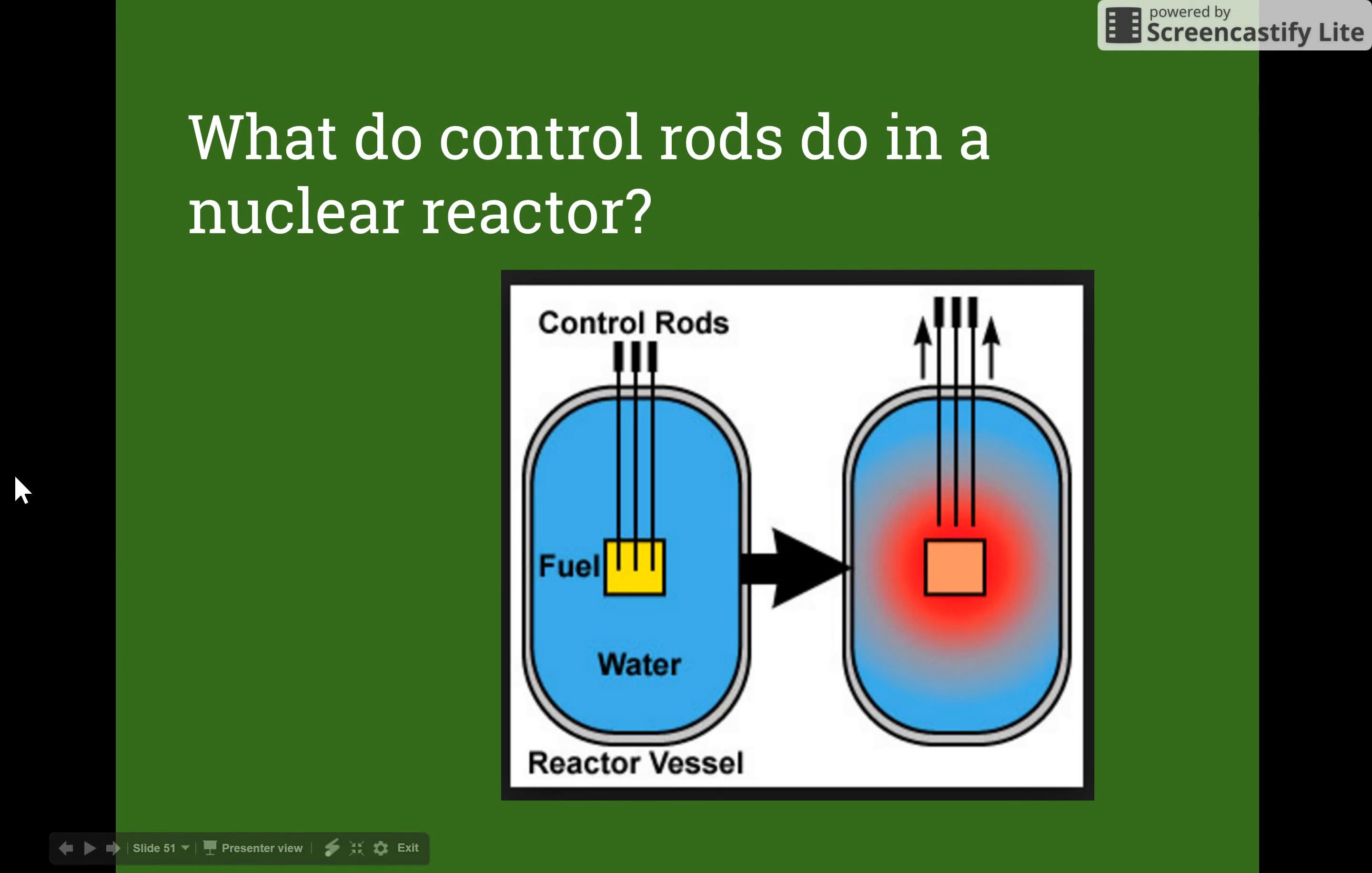What do control rods do in a nuclear reactor? When the control rods are in the nuclear fuel it prevents chain reactions happening.